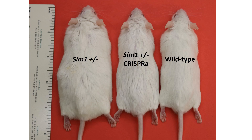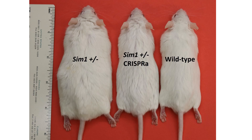Here you can see these mice. On the left is a SIM1 heterozygous mouse that is, as you can see, extremely obese. In the middle is a mouse with the same genotype that should be equally obese, but because of the CRISPRa approach you can see that it looks, in terms of body weight, very similar to the wild-type mouse on the right — suggesting again that we can rescue the obesity phenotype.